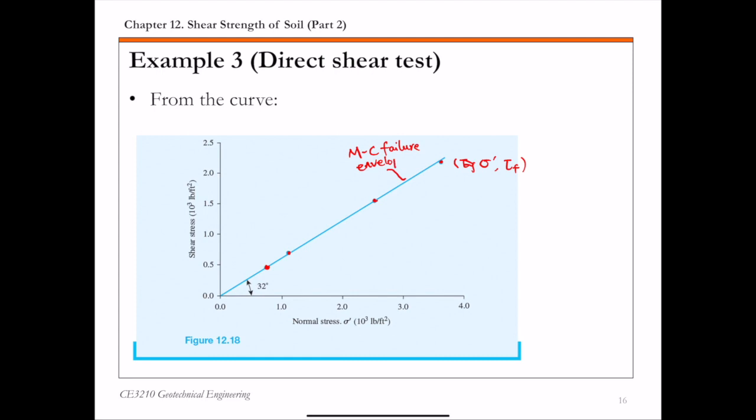Again, because this is dry sand, C prime is approximately zero. So that's why this line fits through this origin. And the slope of this line is the drained or effective stress friction angle phi prime. You can directly read the slope of this line from this fitted envelope, or simply you can calculate using any two points on this line. And from the curve, you get C prime is zero and phi prime is 32 degrees.